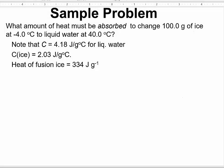Let us take a look at a problem where a change of state is occurring. This question is asking us to calculate Q — the amount of heat that must be absorbed by absorbing energy from the surroundings. That means we have an endothermic system, which means the Q value that we are going to obtain will be positive in value, because this is endothermic.